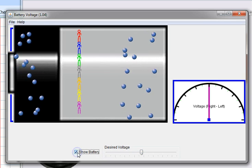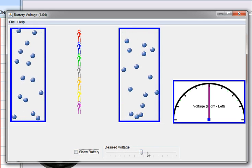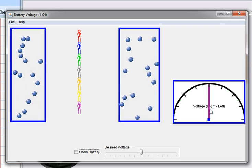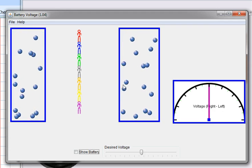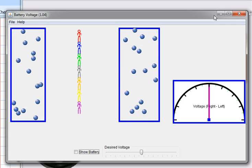And so you can show the battery and you can change the voltage. So this shows the voltage on the right minus the voltage on the left. So it's a potential difference. So there's that one.